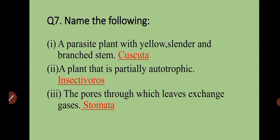Question number seven: name the following. First, a parasite plant with yellow, slender and branched stem — that is Cuscuta. Second, a plant that is partially autotrophic — partially autotrophic means it makes some of its own food but also depends on others, so it is an insectivorous plant like the Pitcher plant. Third, the pores through which leaves exchange gases — those are called stomata.